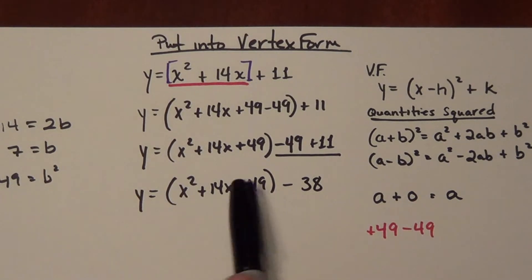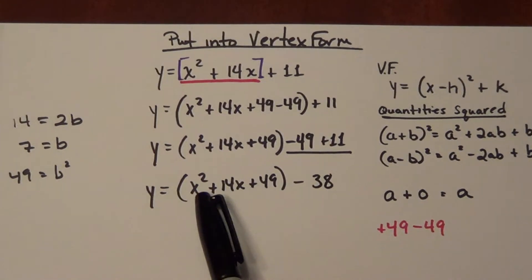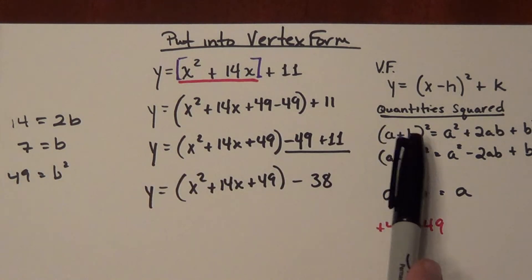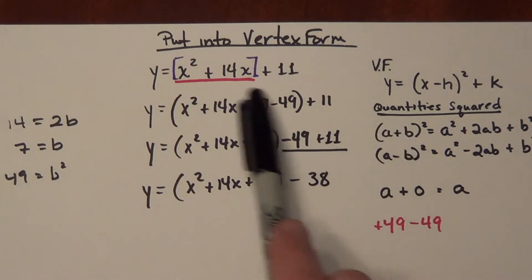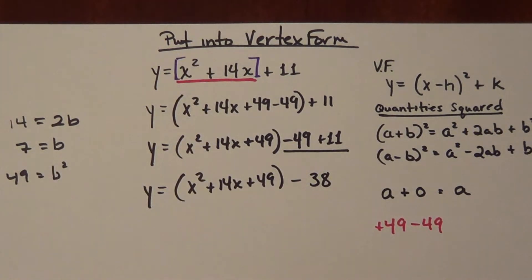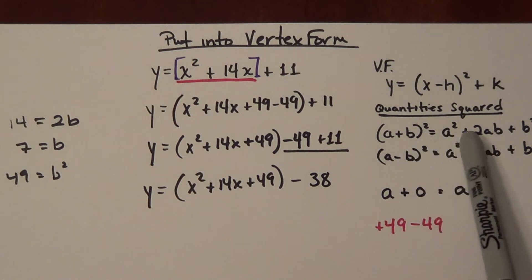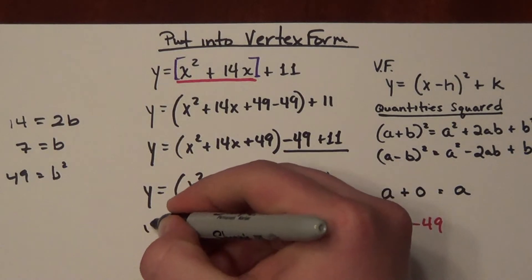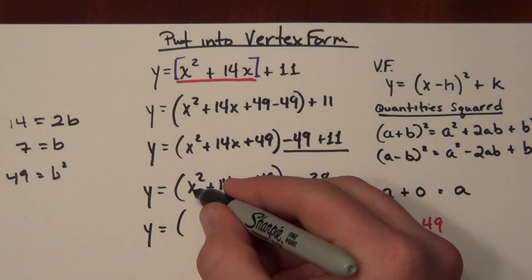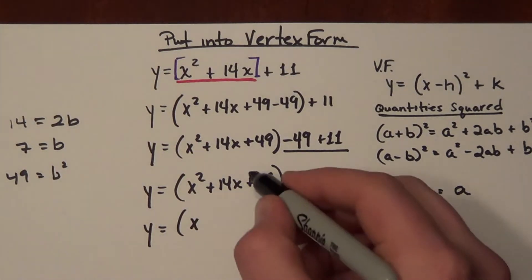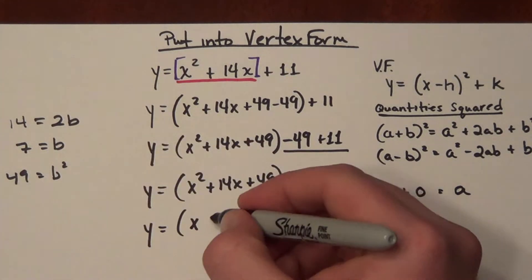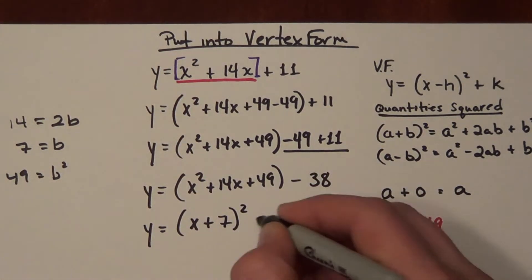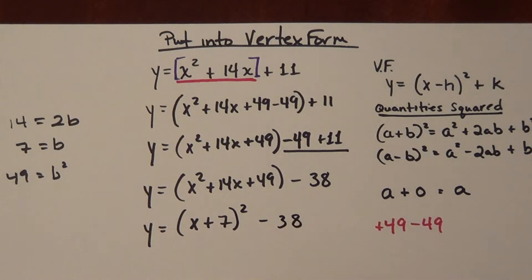Now this quantity x squared plus 14x plus 49 was created by completing the square, so I know it factors into the form a plus b quantity squared, where a is x and b is 7. Because it's addition, it matches the a plus b form. So what I'm left with is y equals the quantity of x plus 7, that quantity squared, minus 38.